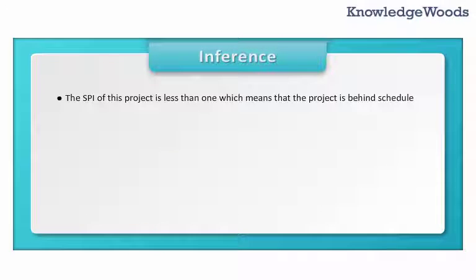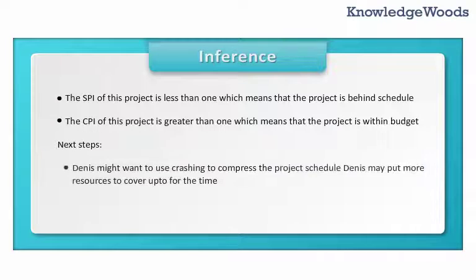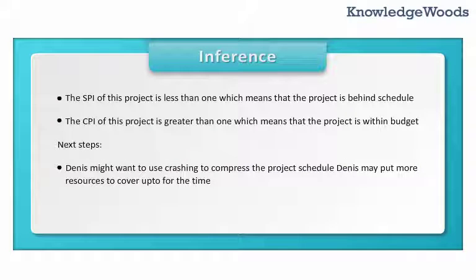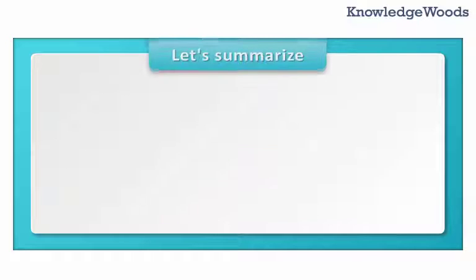The SPI of this project is less than 1, which means that the project is behind schedule. The CPI of this project is greater than 1, which means the project is within budget. For next steps, Dennis might want to use crashing to compress the project schedule, or put more resources to cover up for the time. This may require more money, but the project has a good CPI.